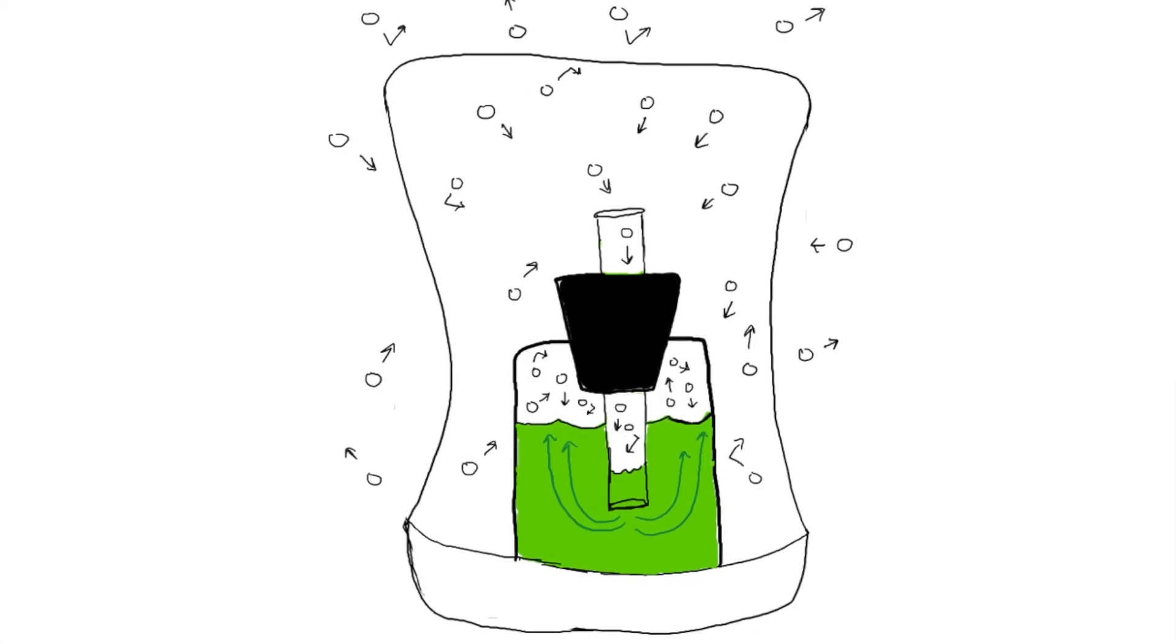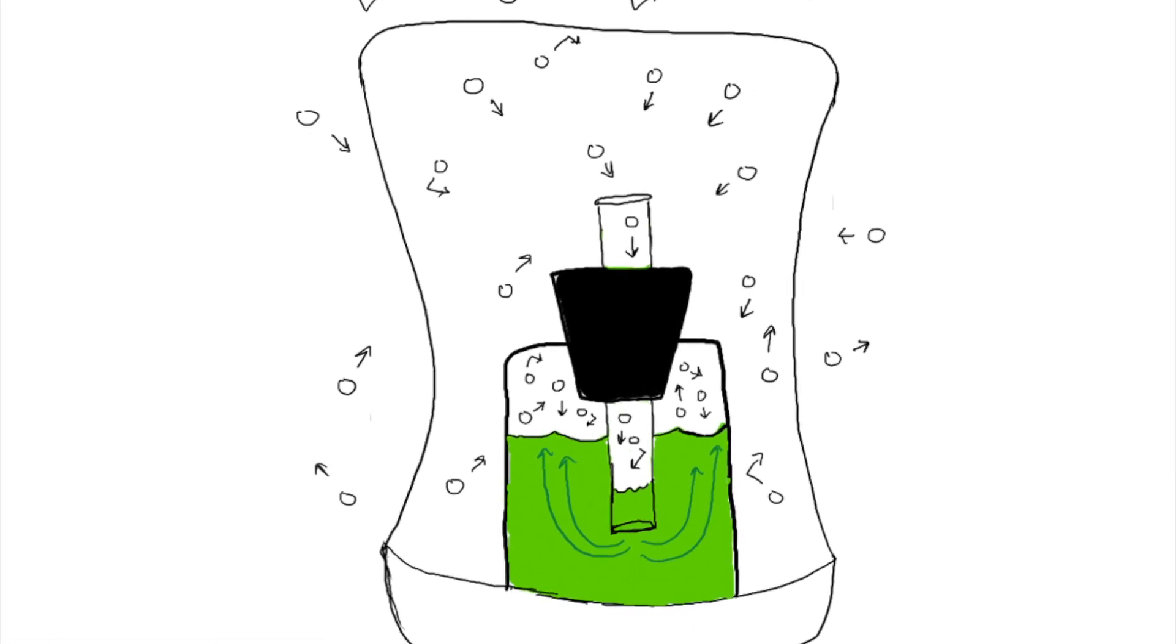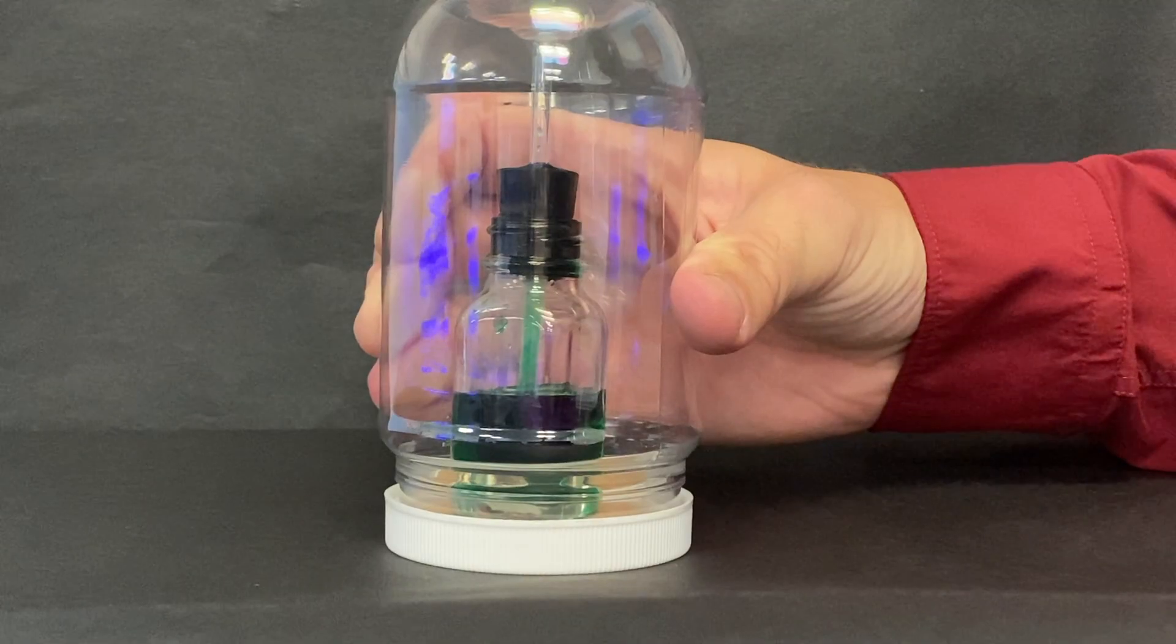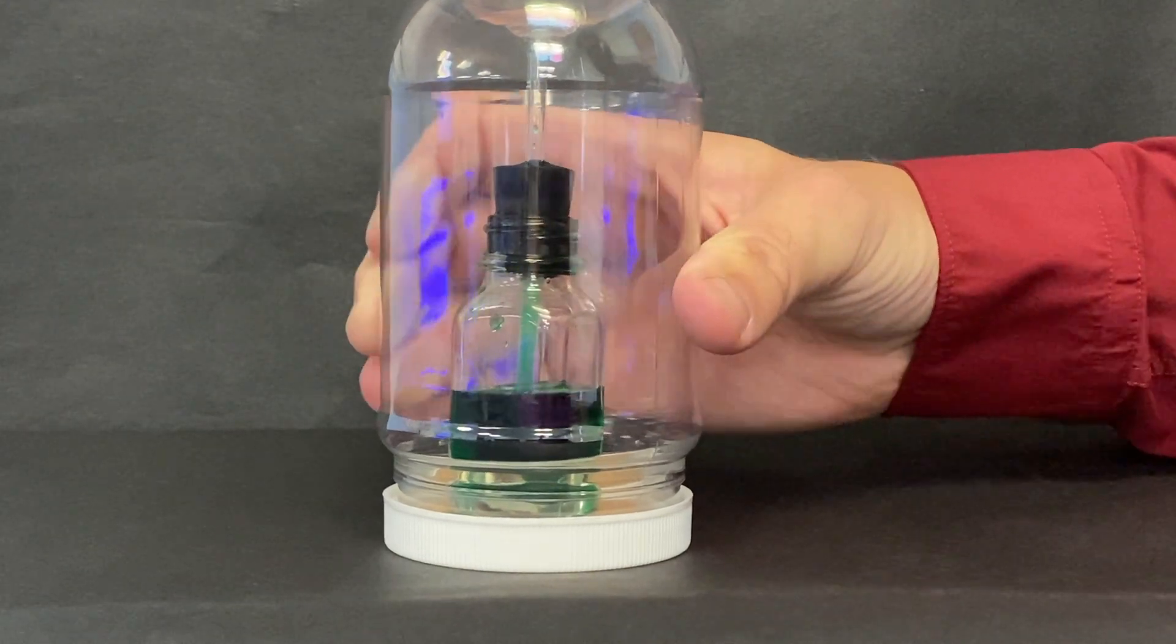The compressed air goes into a smaller space. Water moves down the tube to fill the space that used to be filled with air. That's why the water level in the straw goes down when pressure is applied.